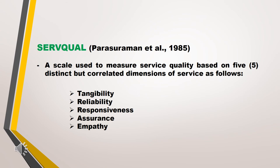The five dimensions of SERVQUAL are: tangibility, which pertains to the physical appearance of facilities, equipment, personnel, and communication materials; reliability, which refers to the ability to perform promised service dependably and accurately; responsiveness, or the willingness to help customers and provide prompt service; assurance, which pertains to the knowledge and courtesy of employees and their ability to inspire trust and confidence; and empathy, which is the caring, individualized attention the firm provides its customers.